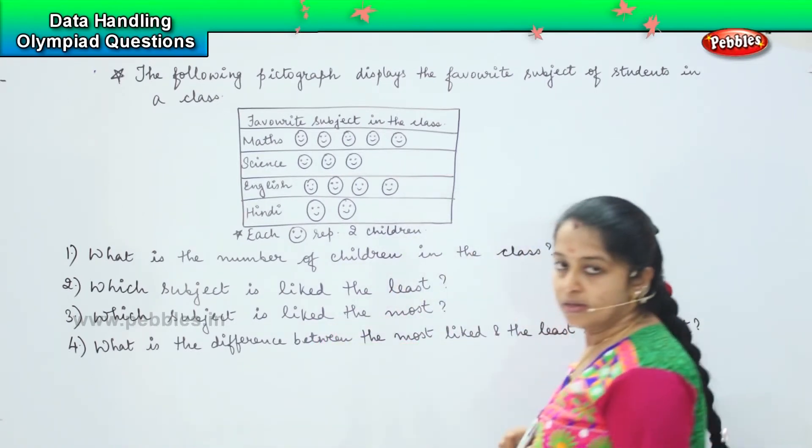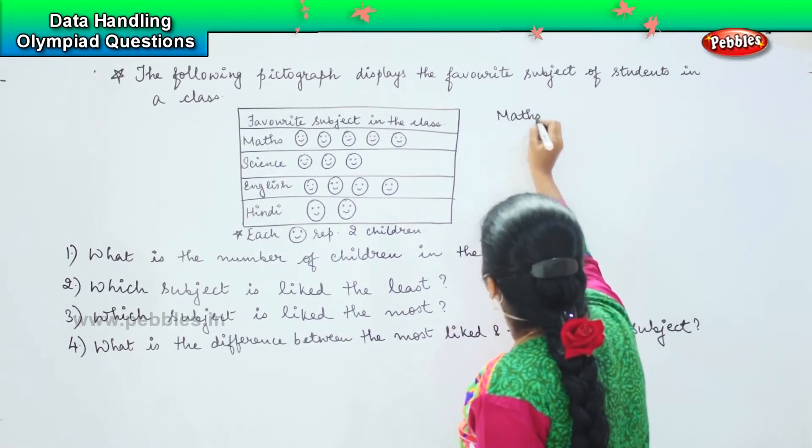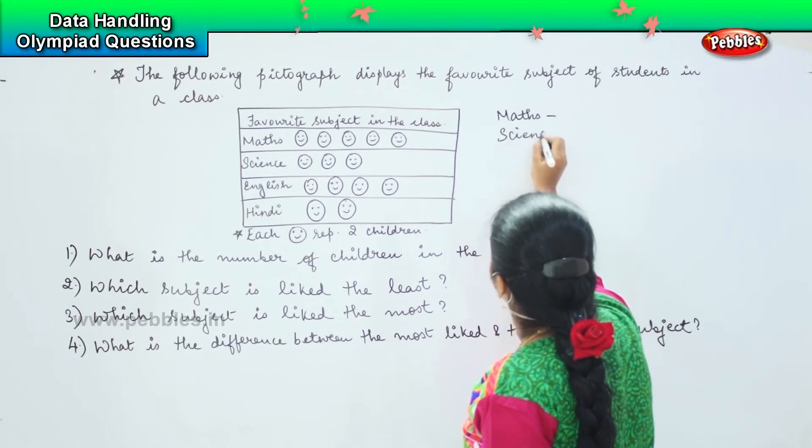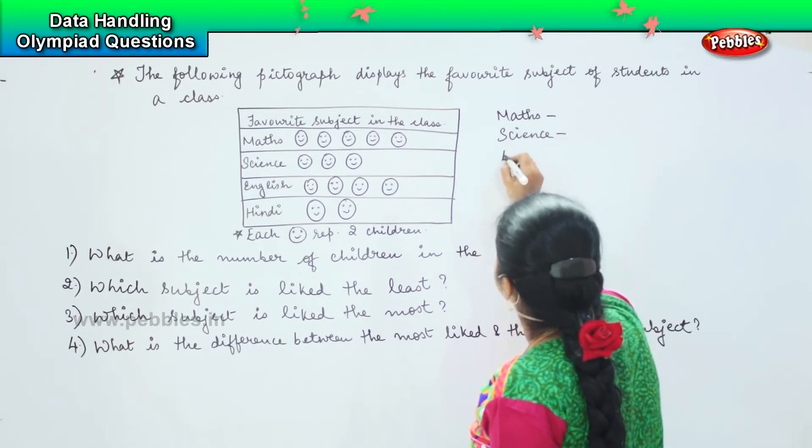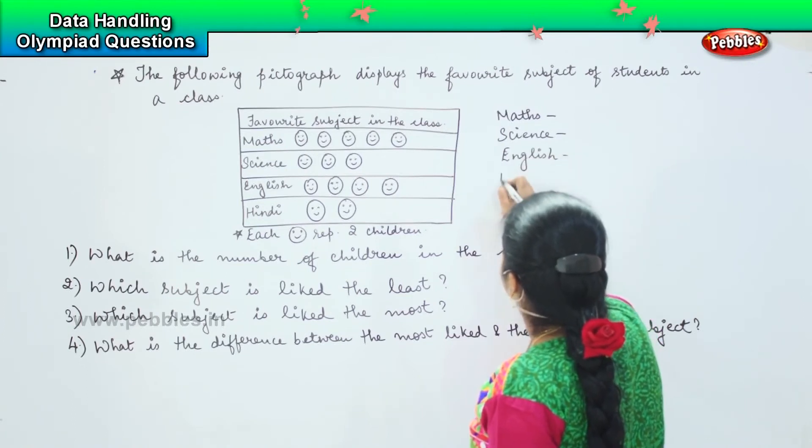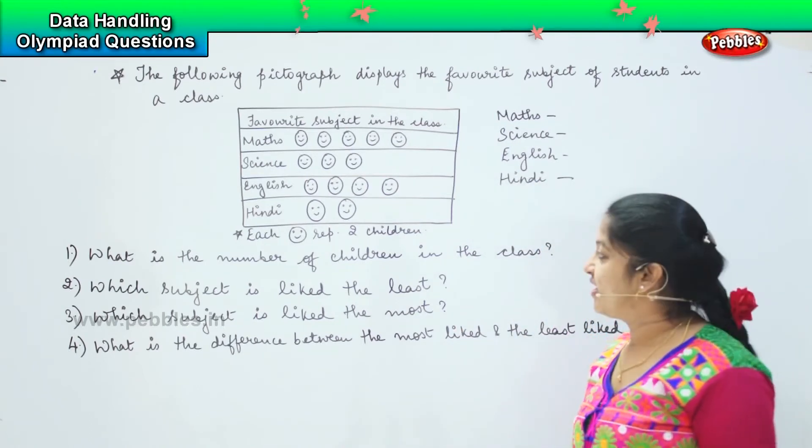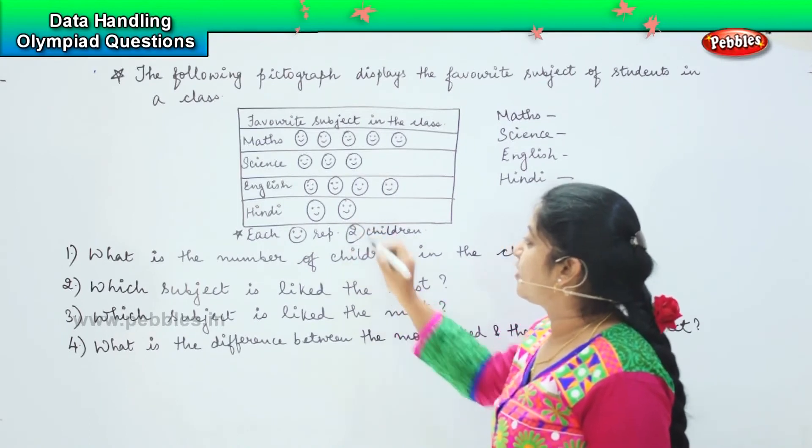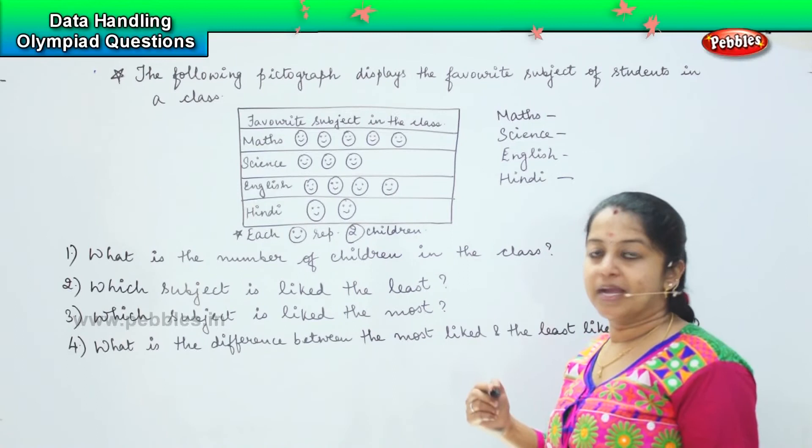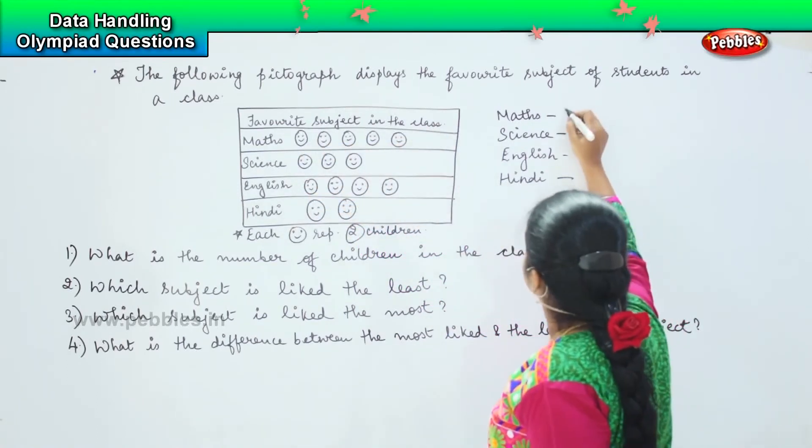So the first thing we will write down what information is given here. I have four subjects: Maths, Science, English, and Hindi. Now the important information given here is each smiley represents two children. So whatever the value given, we have to multiply it by two. Coming to the first one, one two three four five, which means five into two is ten.